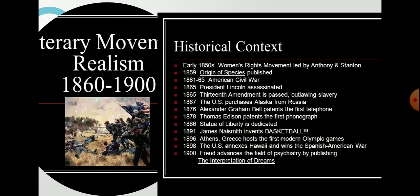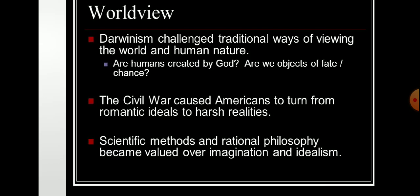The historical context of Realism includes the early 1850s women's rights movement led by Anthony and Stanton, Darwin's Origin of Species published in 1859, the American Civil War, Lincoln's assassination, the 13th Amendment passed, and the U.S. purchase of Alaska from Russia. Darwin's theory challenged traditional ways of viewing the world and human nature, raising questions about whether humans are created by God or are objects of fate or chance. The Civil War caused Americans to turn from Romantic ideals to the harsh realities of life.